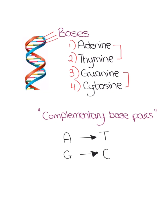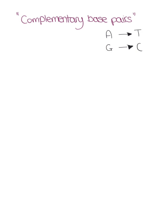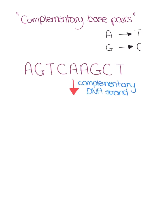An easy way to remember these is to think of the mnemonic AT THE GIANTS CAUSE. For example, say a strand of DNA has the following sequence of bases. The sequence of bases in the complementary DNA strand would be as follows. You can see from this that A always matches with T and G always matches with C.